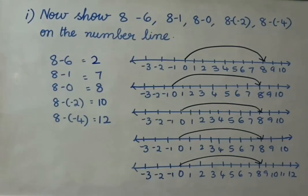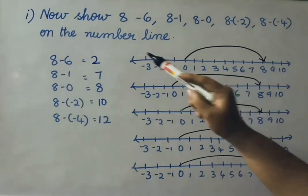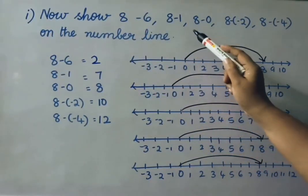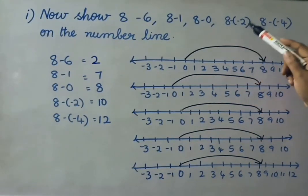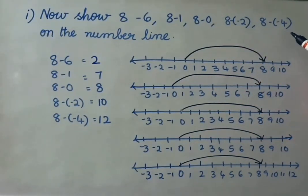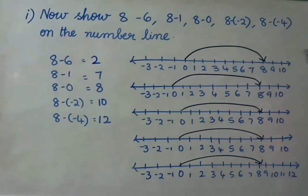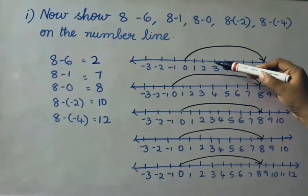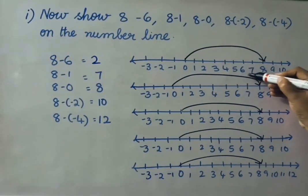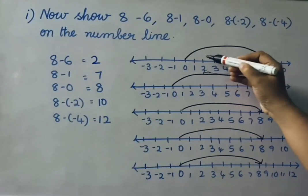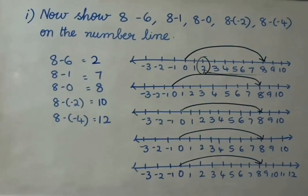See the first sum now: 8 minus 6. Also shown: 8 minus 1, 8 minus 0, 8 minus of minus 2, 8 minus of minus 4 on the number line. For 8 minus 6: first show 0 onwards 8, then from 8 count 6 numbers backward — 1, 2, 3, 4, 5, 6 — so from 8 onwards we land on 2. The answer is 2.